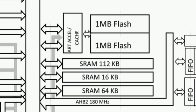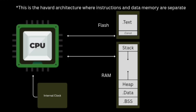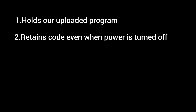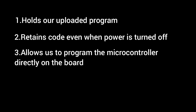Next, we have Flash Memory. Flash Memory is a type of non-volatile memory, mainly used to store the program code or firmware, and sometimes constant data. So this is where our program is permanently stored. It retains data even when power is off, and it also allows us to update the firmware without removing the chip. It's slower than RAM, but ideal for permanent storage.